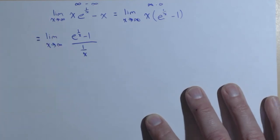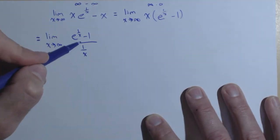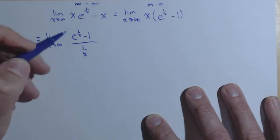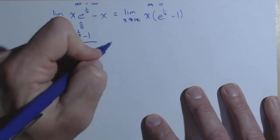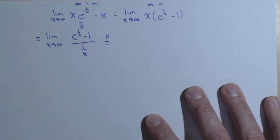So one over x, now we know this goes to zero, as x goes to infinity this goes to zero, I now have a zero over zero case, I am now good to go on applying L'Hopital's rule.